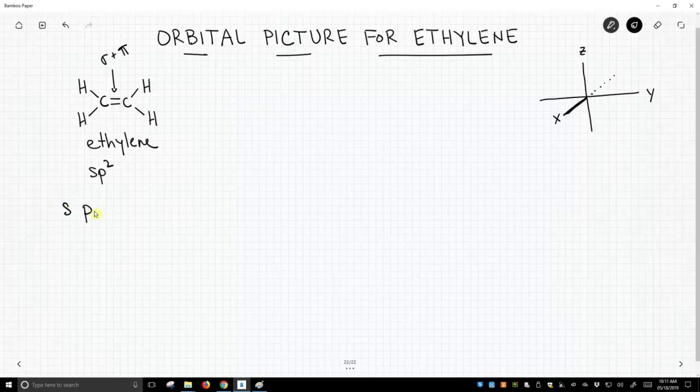So let's be very specific about what p orbitals we're using, and that's why I've drawn this axis on the left. So we have the s, the px, py, and pz. I'm going to choose to make our sp2 hybrids out of the px and the py.